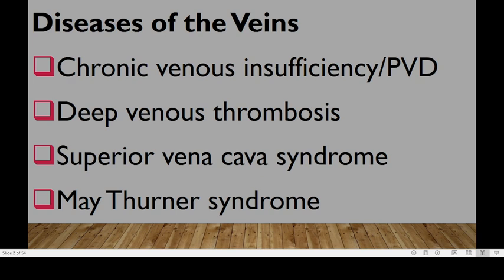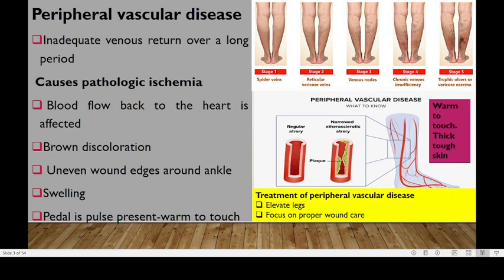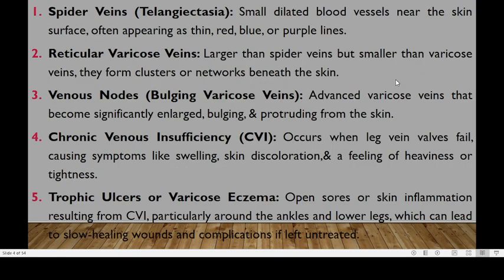We can start by looking at diseases affecting the veins. We'll start with the first one, which is chronic venous insufficiency, popularly referred to as peripheral vascular disease. This disease is normally caused by inadequate venous return over time. It normally develops into five stages, starting with spider veins, reticular varicose veins, then venous nodes, then venous insufficiency, and lastly trophic ulcers or varicose eczema.